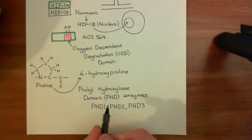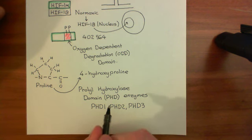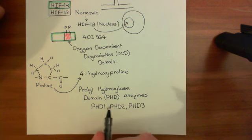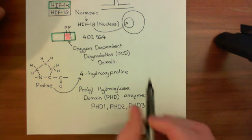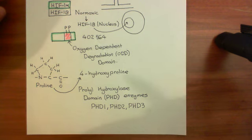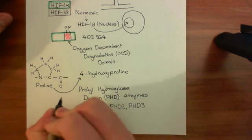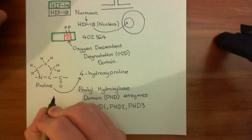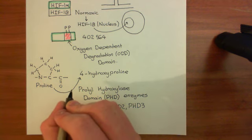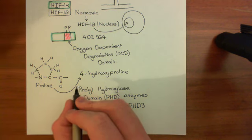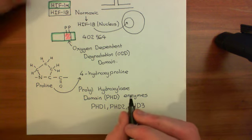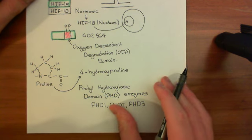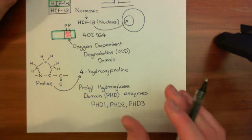Under normal oxygen conditions, the instant HIF-1 alpha is made, the PHD enzymes hydroxylate the prolines at positions 402 and 564. This is the oxygen-dependent reaction — it will only occur if oxygen is present. If the cell is in hypoxic conditions, you won't get this hydroxylation and therefore you won't destroy the proline.